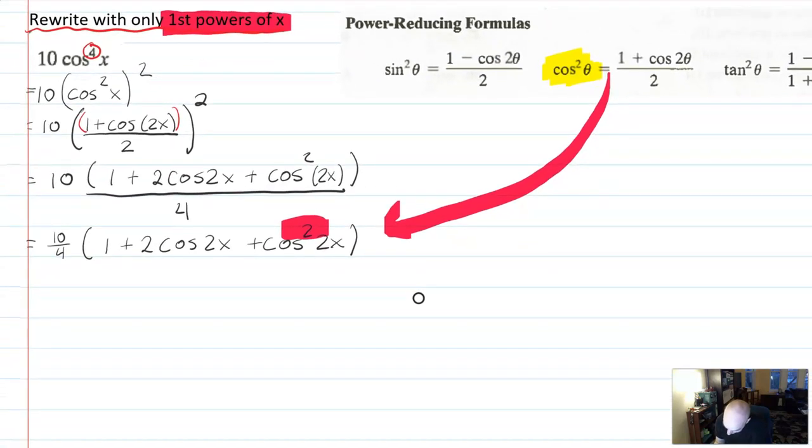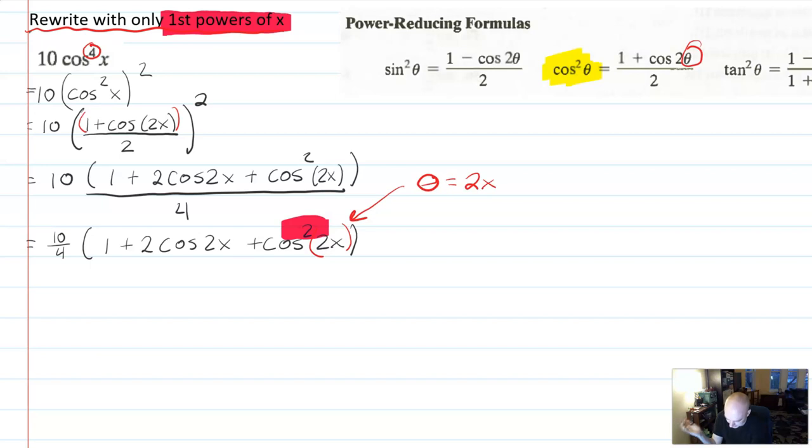So I'm going to take this and do it again. Now here when I use it a second time, the role of theta is taken, like the theta that you see in the identity is taken by the term 2x because the theta just refers to whatever's in the argument. So this part of the identity, I'll just do this part separately and then I'll rewrite the rest in, is going to simplify to 1 plus cosine of 2 times 2x. Right? 2x takes the role of theta, but you still have this 2 from the identity.